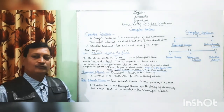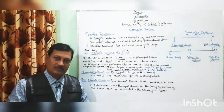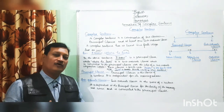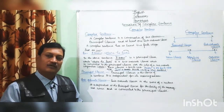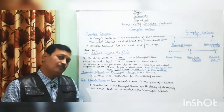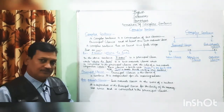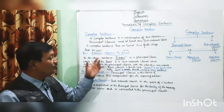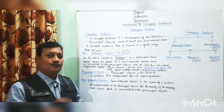Dear students, we should know what a clause is. A clause is a group of words which has a subject and a predicate. A complex sentence has at least two finite verbs.